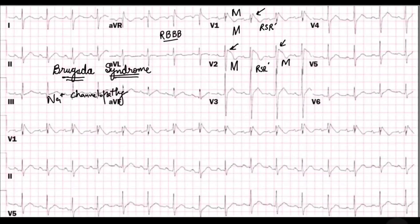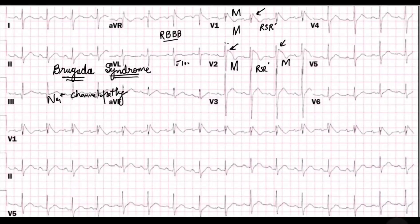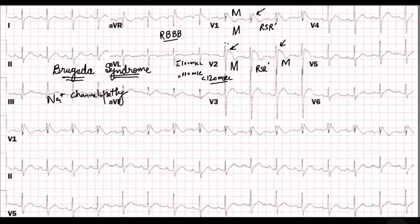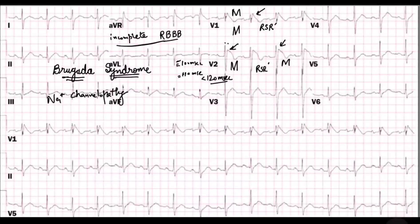Now we know that to call it bundle branch block, the QRS duration should be greater than 120 milliseconds. Here it is around maybe 100 milliseconds or maybe around 110 milliseconds — so less than 120 milliseconds. Some people would call it interventricular conduction defect, IVCD. Most would simply call it incomplete right bundle branch block. Whatever suits you, it is alright.